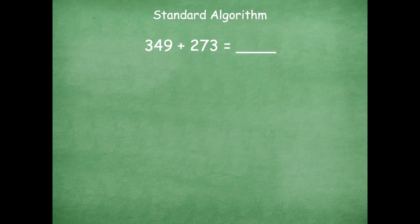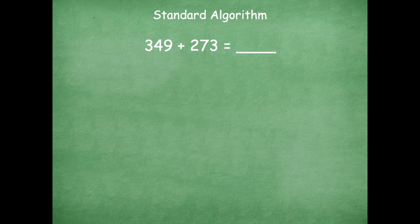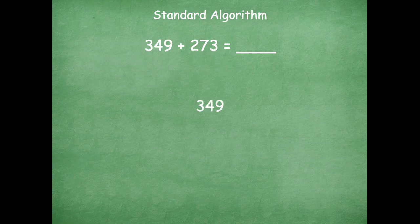All right, let's take a look at another one. So we have 349 plus 273. So we're going to line these up nice and neat now that we're using and adding three digit numbers especially. It can get a little bit trickier if you don't line them up nice and neat.